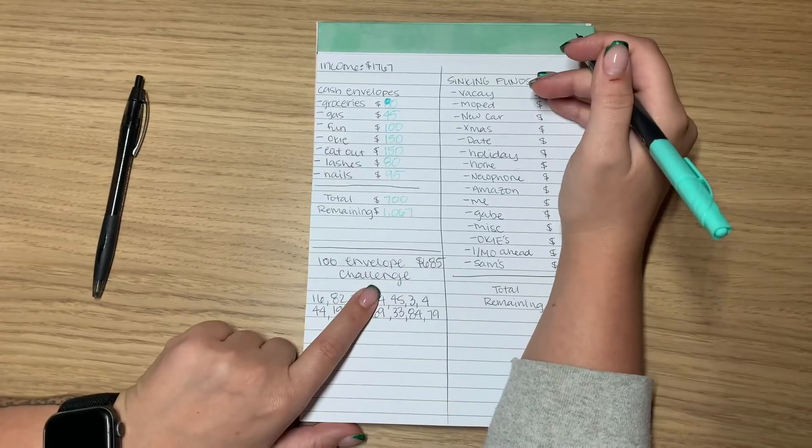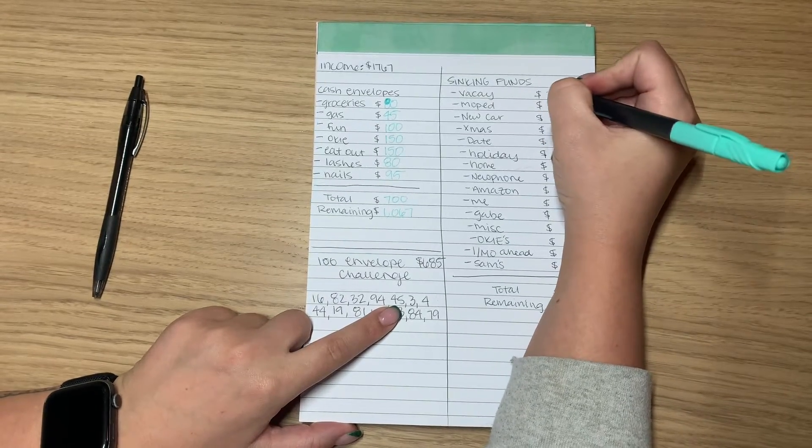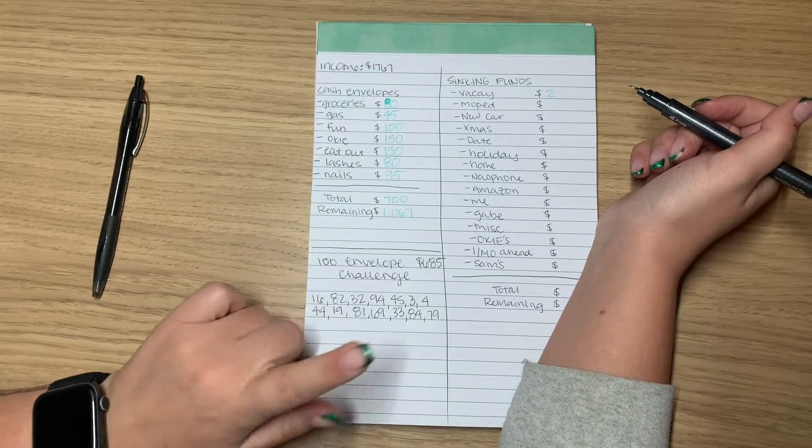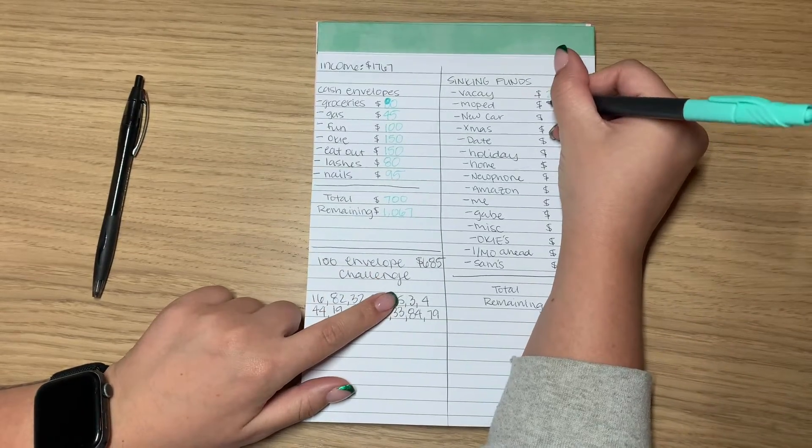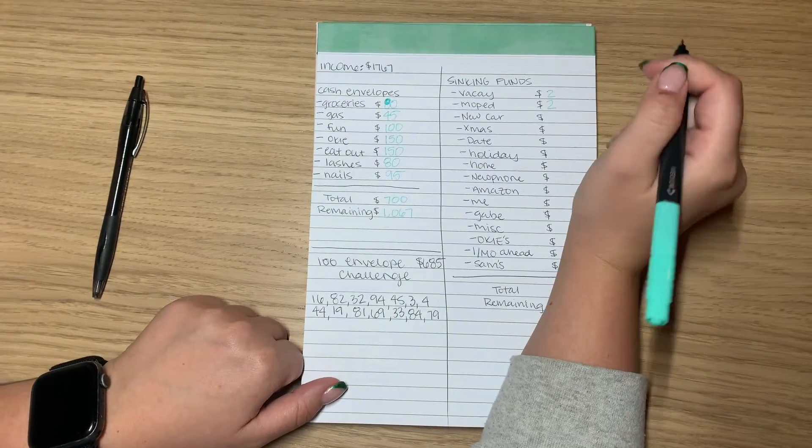Really my priority is my 100 envelope challenge, but I'm stuffing vacation with $2. We're not really going anywhere anytime soon, so I have some time. Moped's getting $2. I'm just going to tackle that when I have everything else in line.